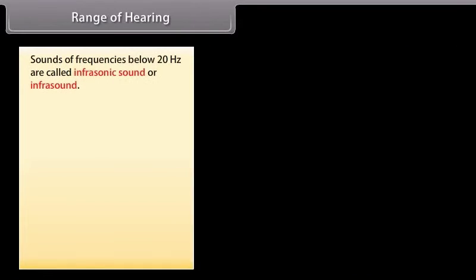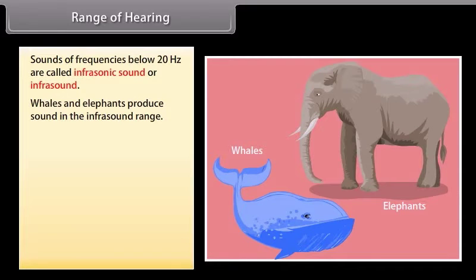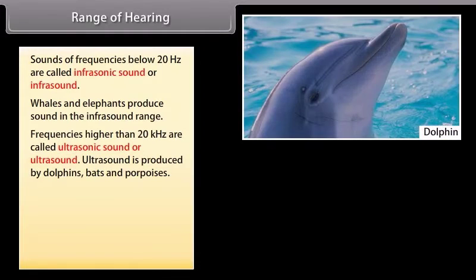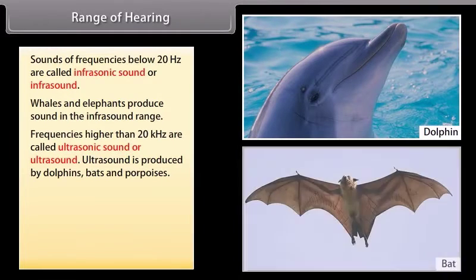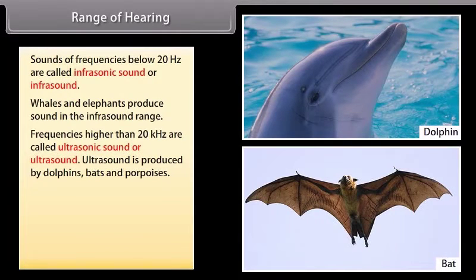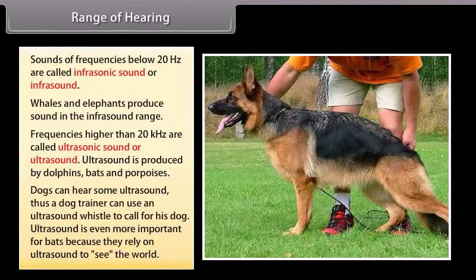Sounds of frequencies below 20 hertz are called infrasonic sound or infrasound. Some animals like whales and elephants produce sounds in the infrasound range. Frequencies higher than 20 kilohertz are called ultrasonic sound or ultrasound. Dogs can hear some ultrasound. Thus, a dog trainer can use an ultrasound whistle to call his dog. Ultrasound is even more important for bats because they rely on ultrasound to see the world.